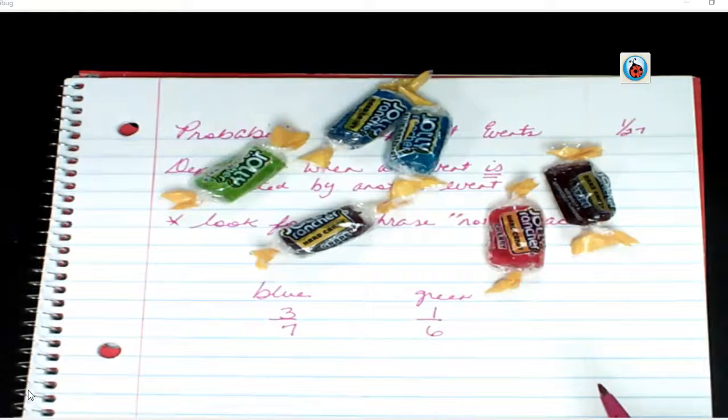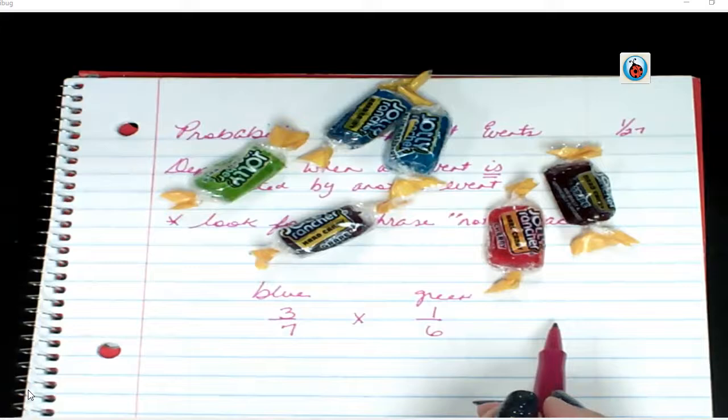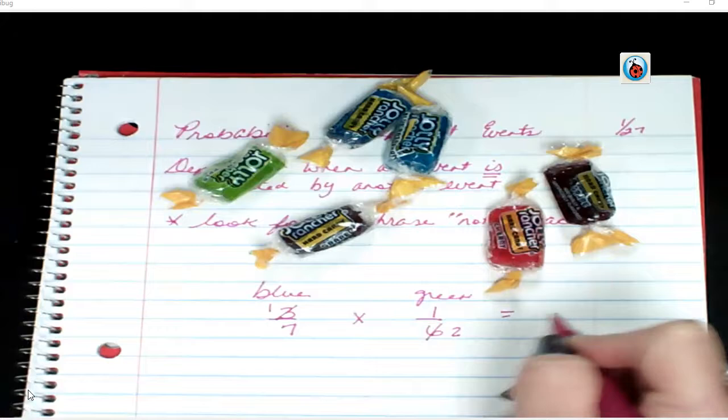I could multiply straight across and then reduce or we can reduce first. Three goes into three once and a six twice. So my answer is 1 to 14.